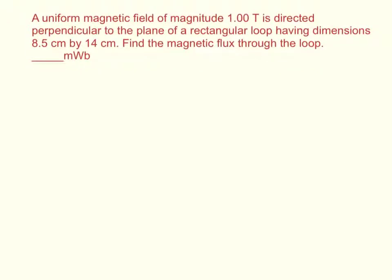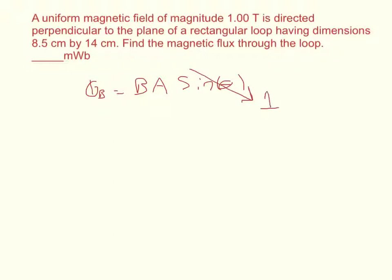We'll set up our equation: the magnetic flux phi sub B is equal to the magnetic field B times the area of the loop times the sine of theta. Since it's perpendicular, we define sine of theta as sine of 90 degrees, which equals 1, so it just cancels itself out.